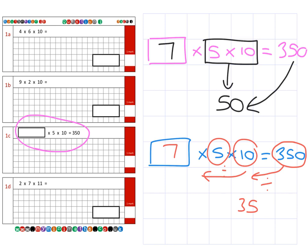And again, once we have our answer of 7, we need to check it fits. So, 7 times 5 is 35, times by 10 gives us our 350, so we know it fits perfectly with the question.